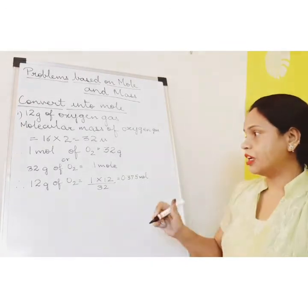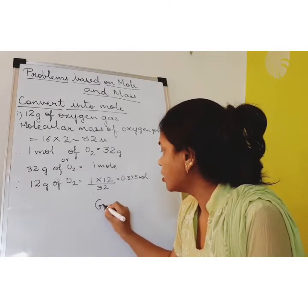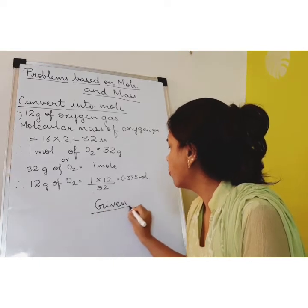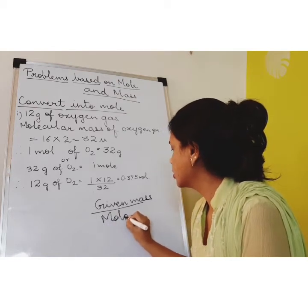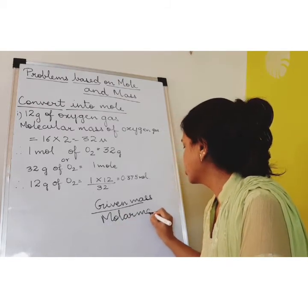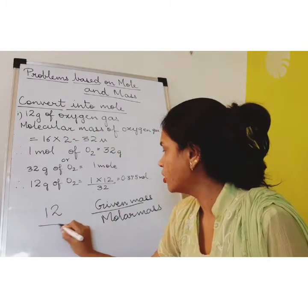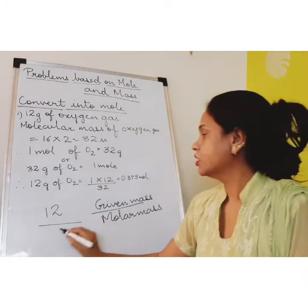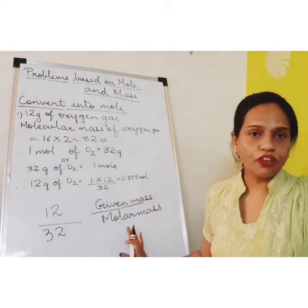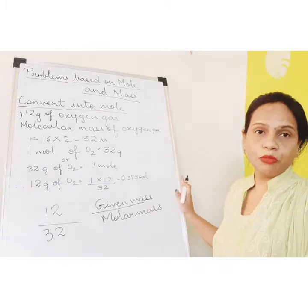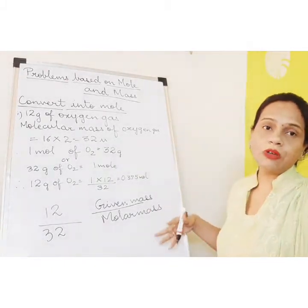The other way, according to the formula: when we have to find out the moles, it is the given mass upon the molar mass. The given mass is 12, and the molar mass we calculated to be 32. This formula is for finding out the number of moles.